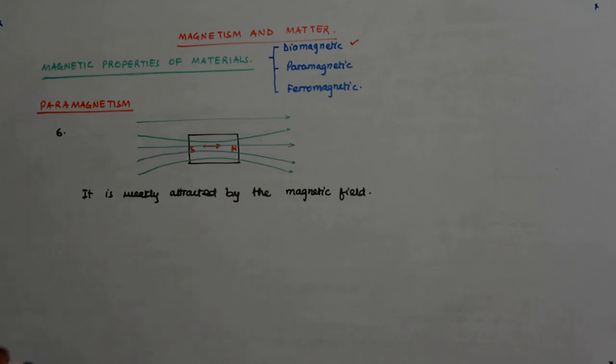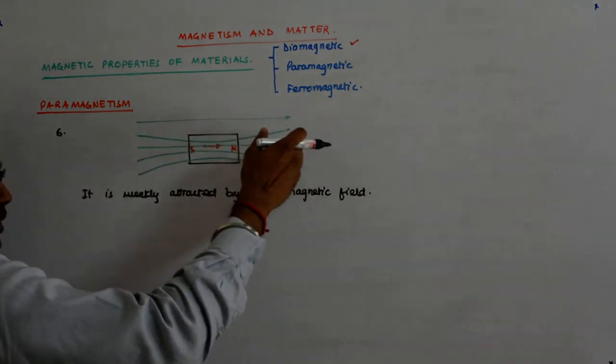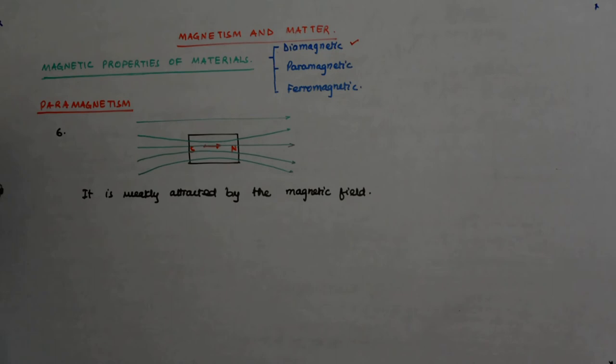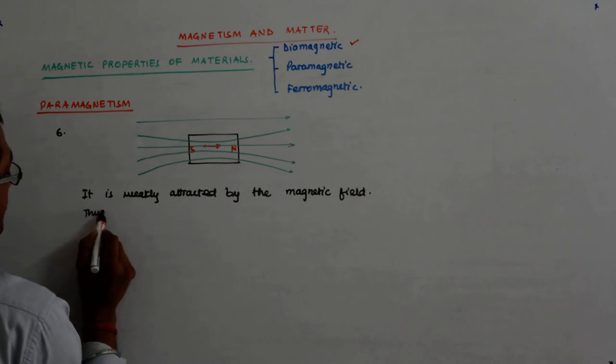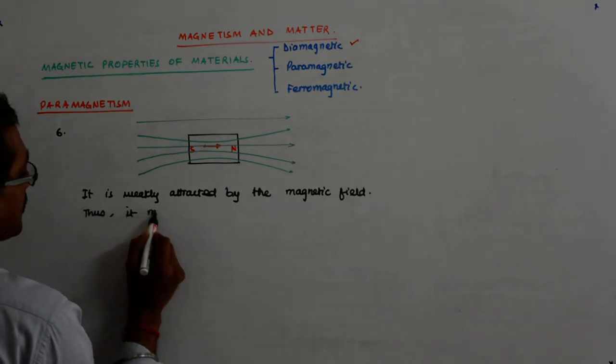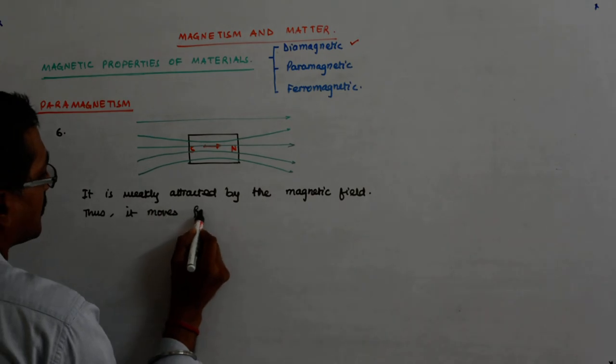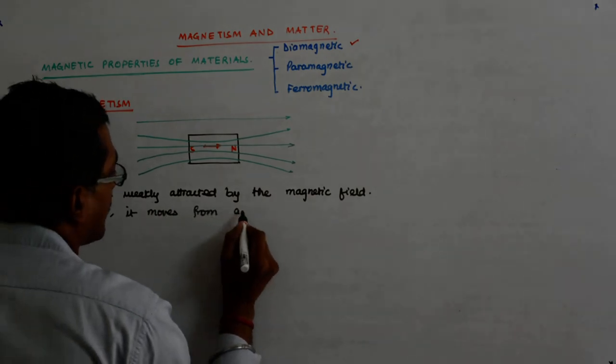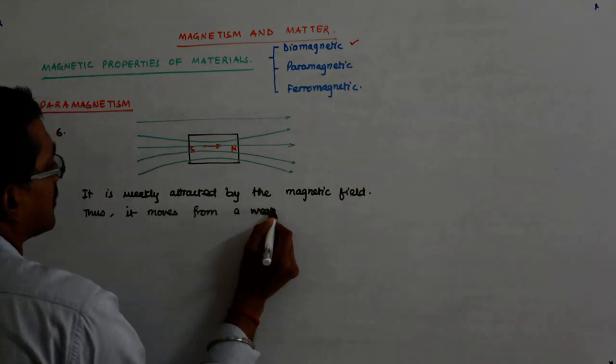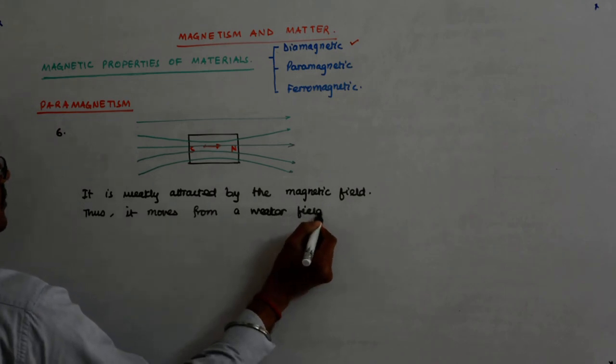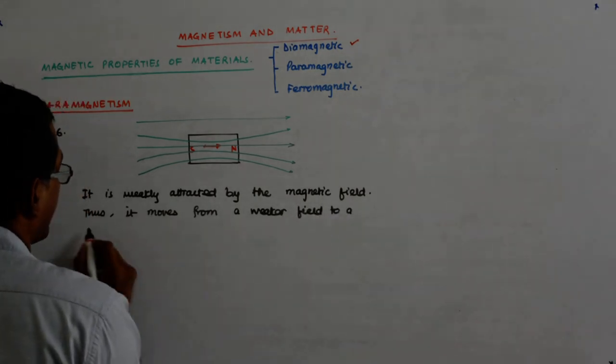So if there is a north pole here and there is a south pole here, it has a tendency to move from a weaker field to a stronger field. It moves towards the pole, right? So does it move from a weaker field to a stronger field?